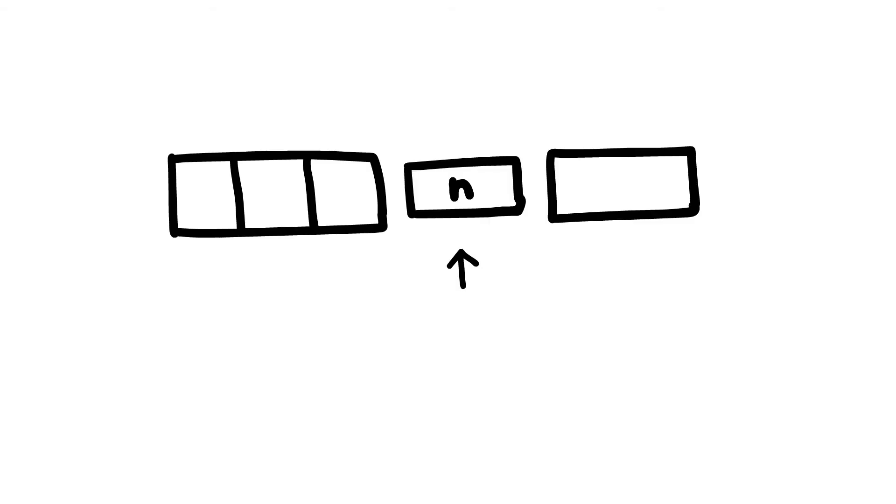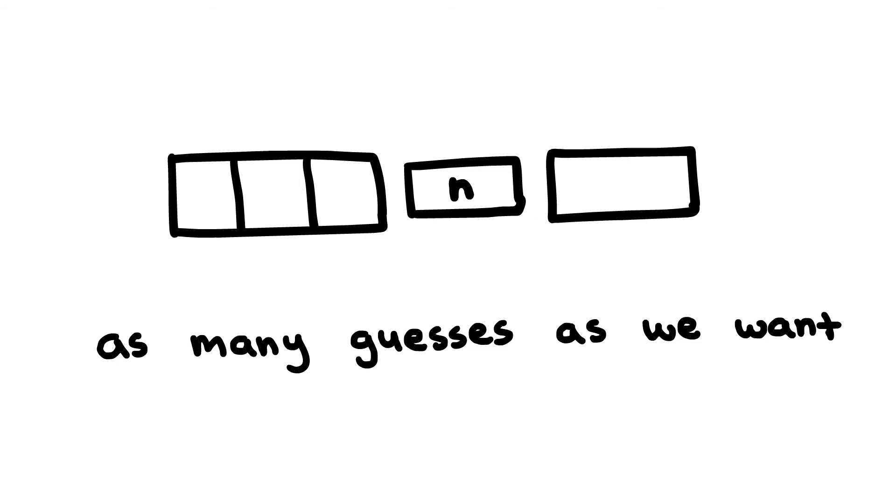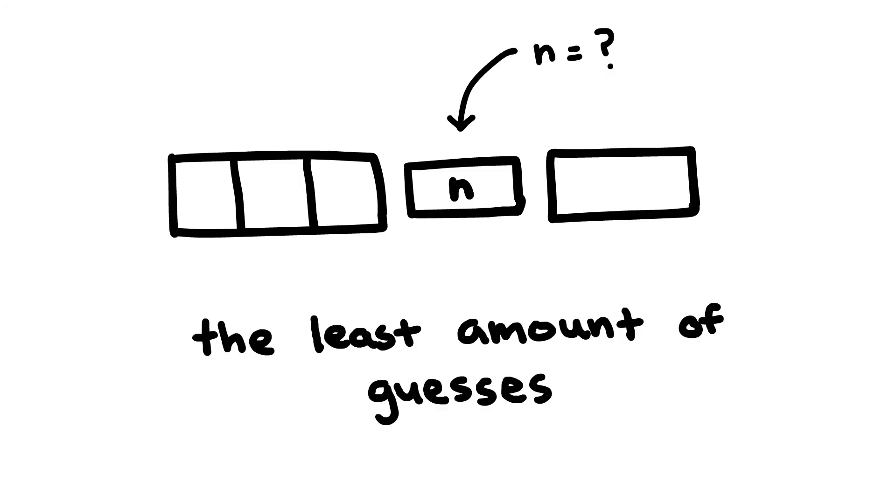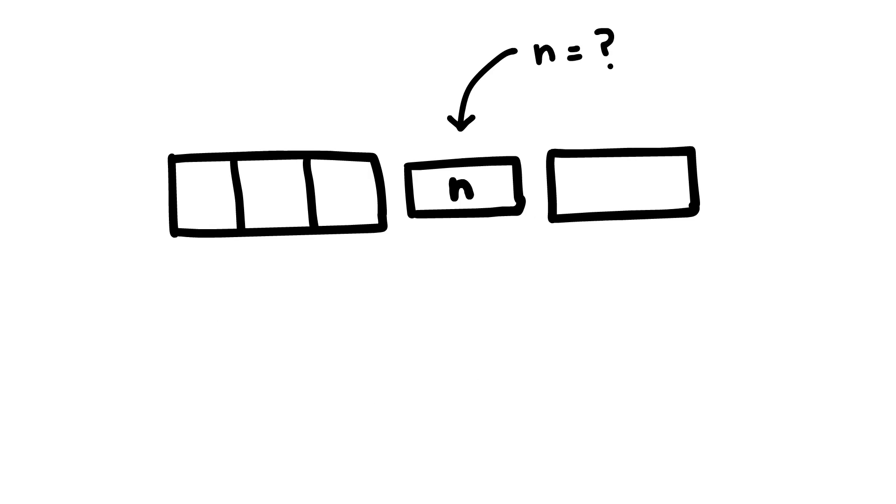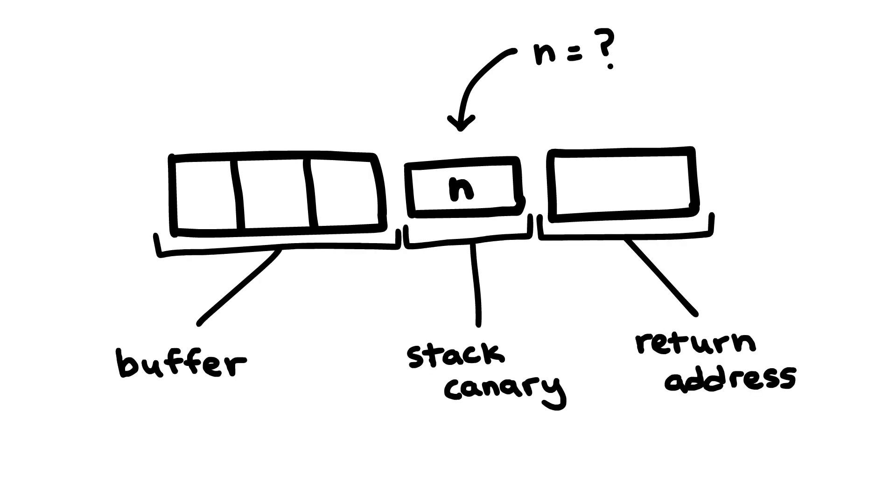To review, the problem is that we have a stack canary on the stack that's between our buffer and the return address that we want to overwrite. Assume that, thanks to many worker processes discussed earlier, we can have as many guesses as we want. Our job is to figure out what the canary is in the least amount of guesses possible. I would encourage you to pause the video here and try to figure it out for yourself. I'll wait a moment.